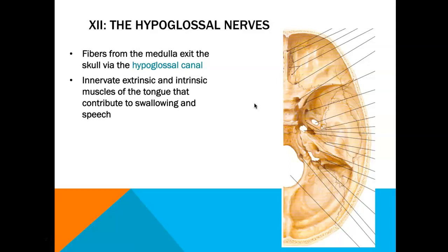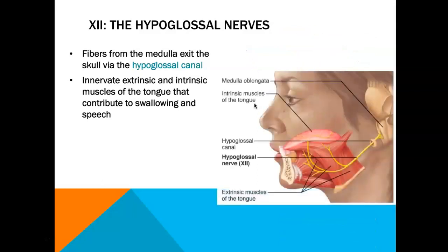Cranial nerve number twelve is the hypoglossal nerve. It exits from the medulla and leaves the skull via the hypoglossal canal, found anterior and just superior to the foramen magnum. Its job is to innervate extrinsic and intrinsic muscles of the tongue, contributing to swallowing and speech.